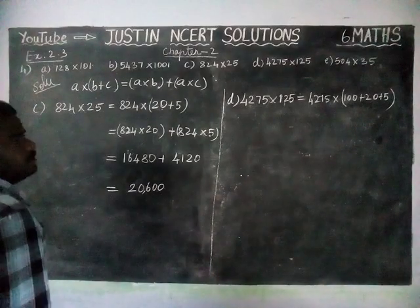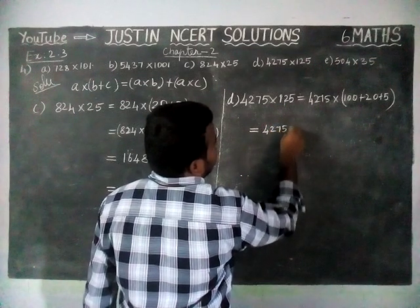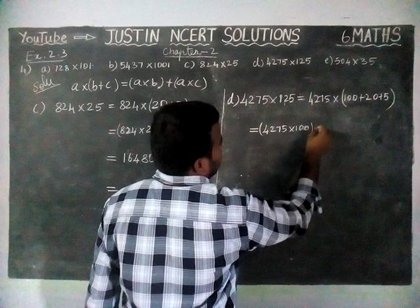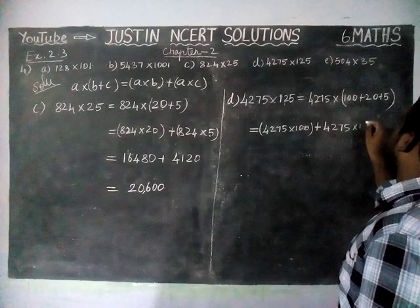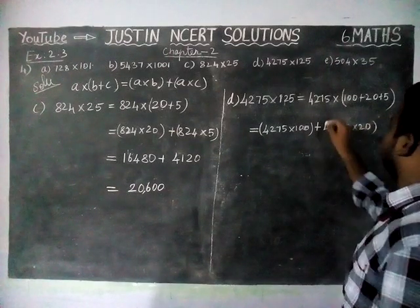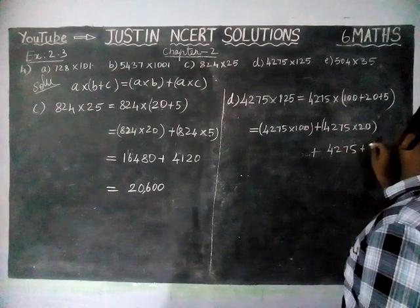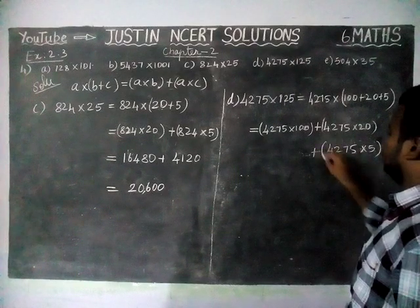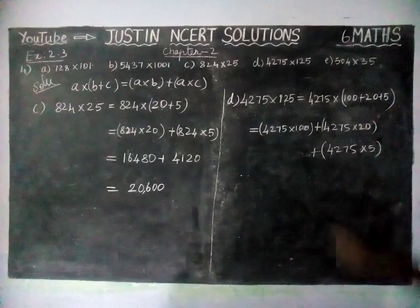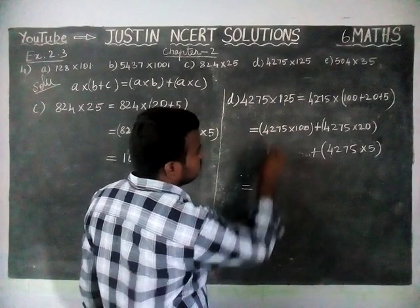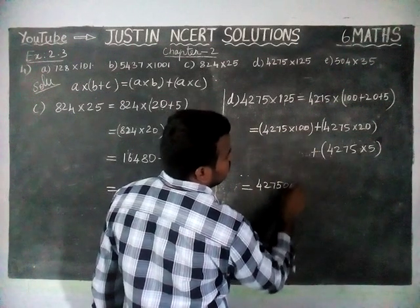We are going to multiply everything: 4275 into 100 plus 4275 into 20 plus 4275 into 5. We can write it as 100 plus 25 also, or 100 plus 20 plus 5 also. For 4275 into 100, we are going to add 2 zeros.